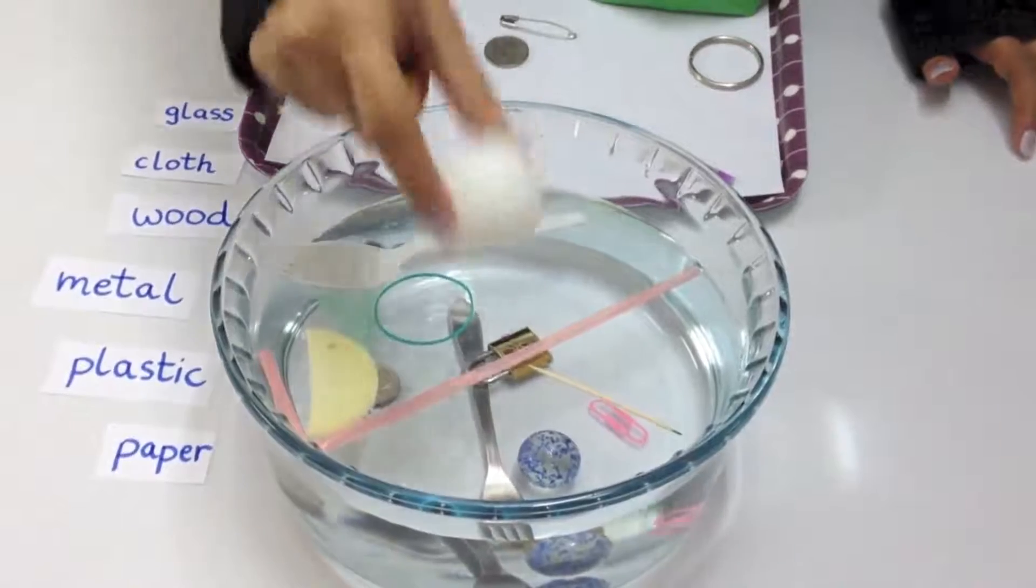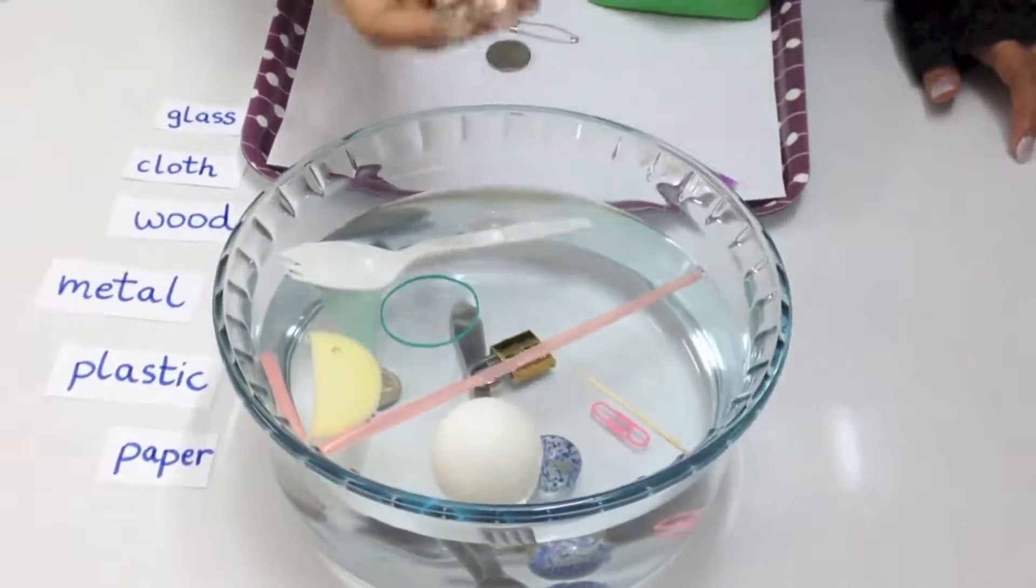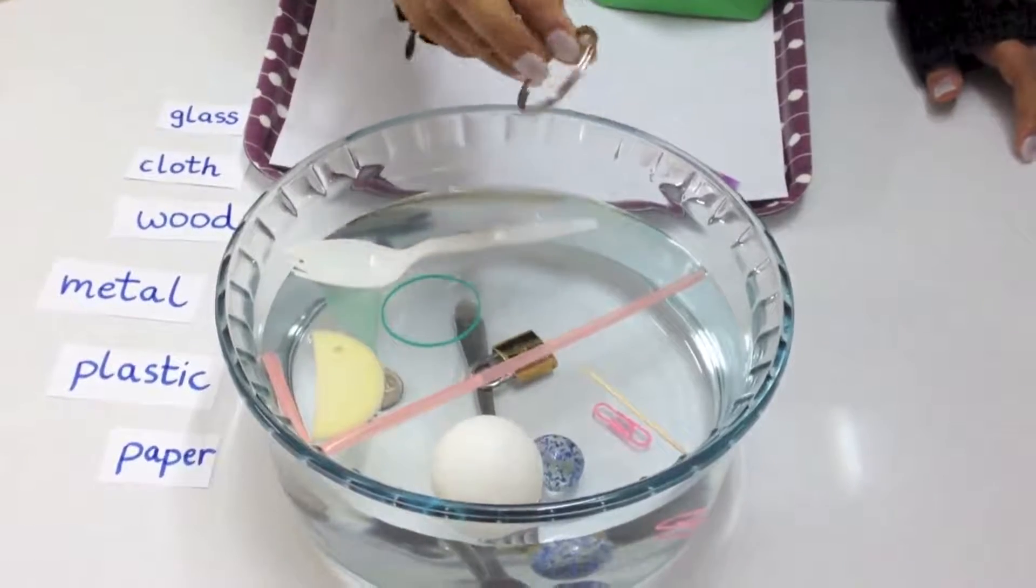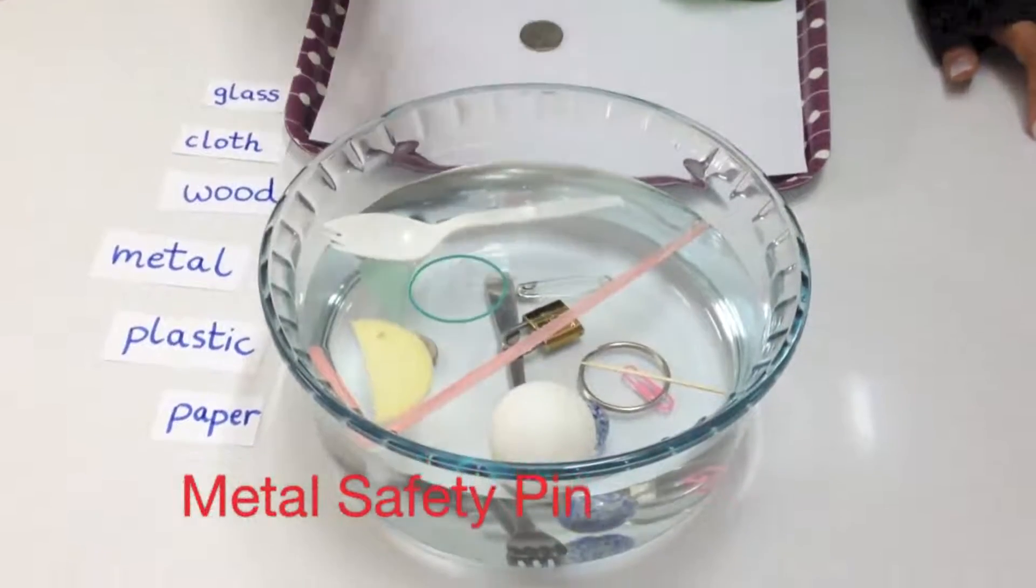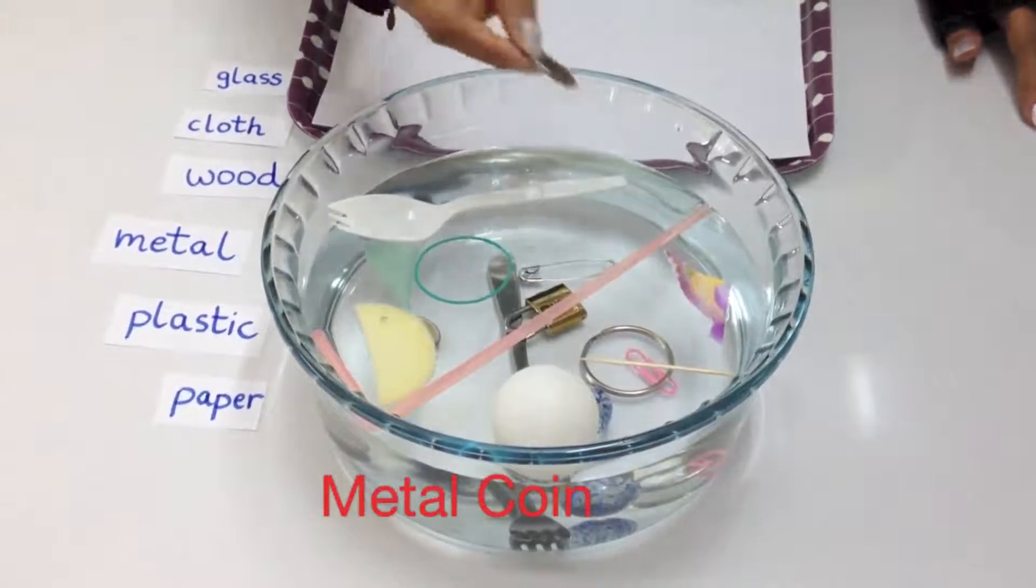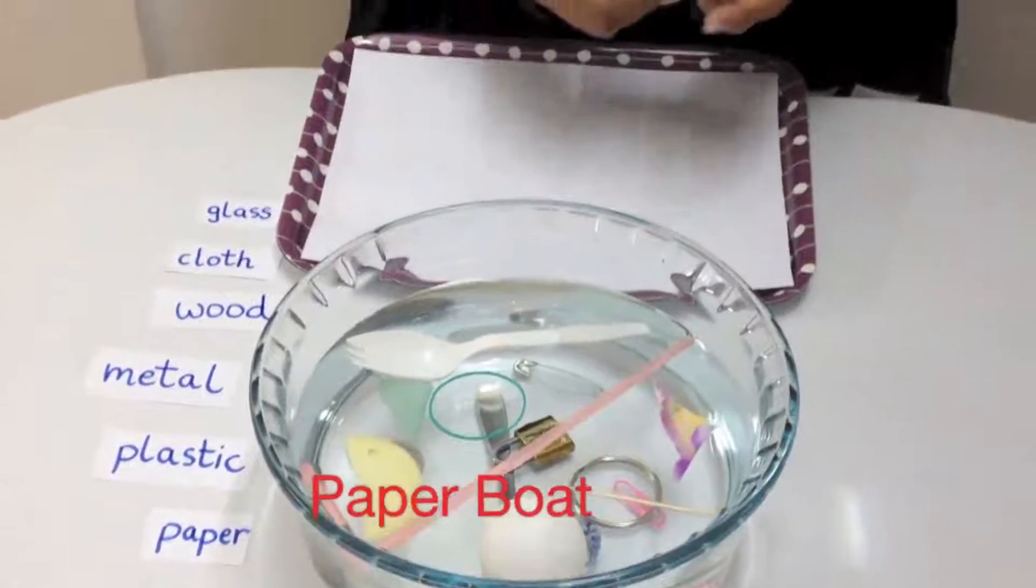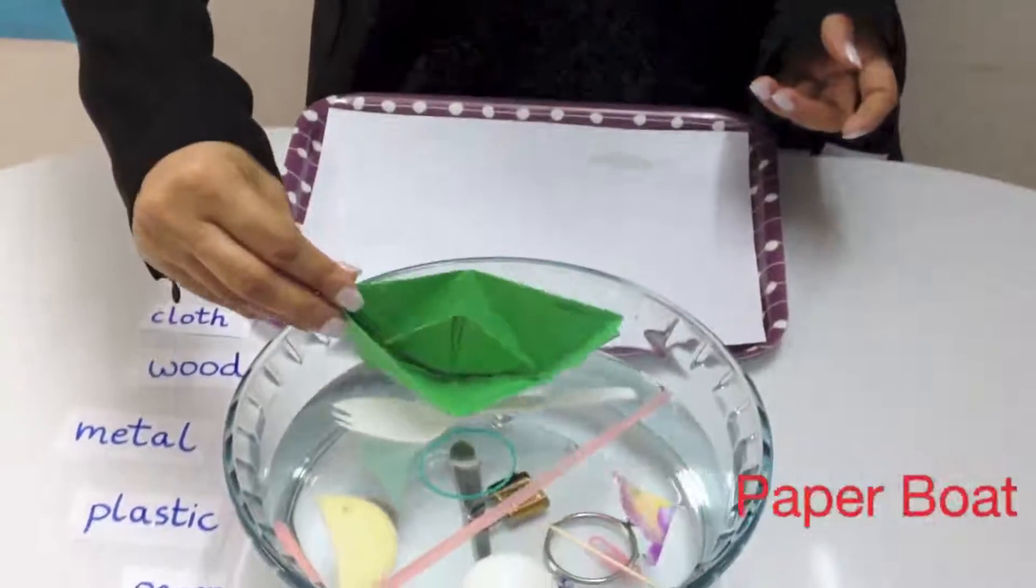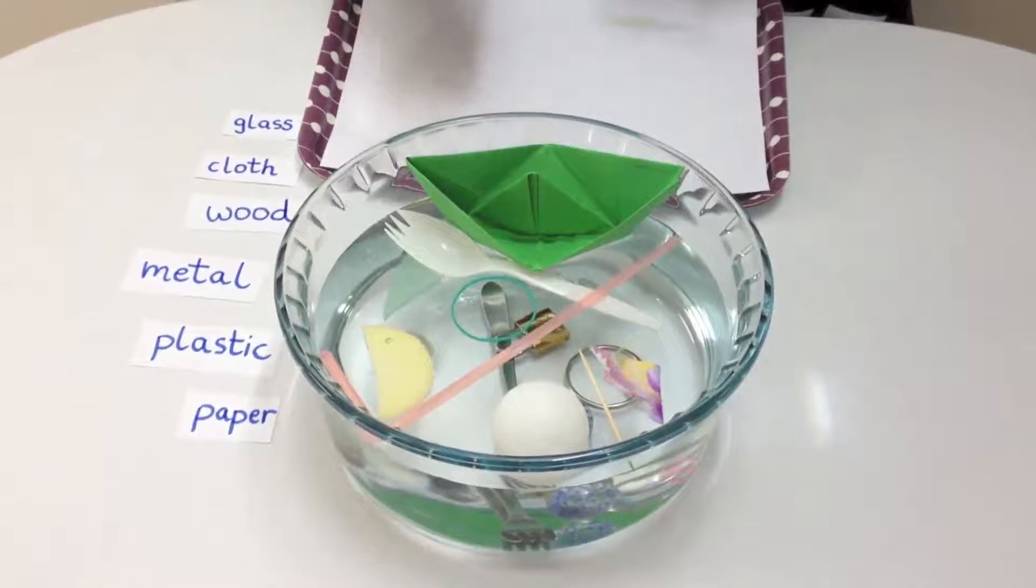Now I'm going to put a plastic ball, a ping pong ball which floats, and a metal ring which is a key ring which you can see sinks. At first a paper boat may float, but later if the paper absorbs water it might make the boat sink.